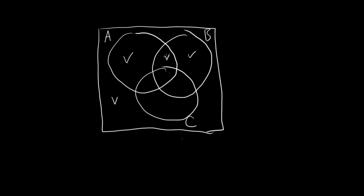And now we have to check everything that's in B. So this is in B, this is in B, this is in B, and this is in B. So the area with the double check here — we can see that these two areas represent C' intersect B. So now let me go and get rid of the single check marks because they are not included in the intersection.